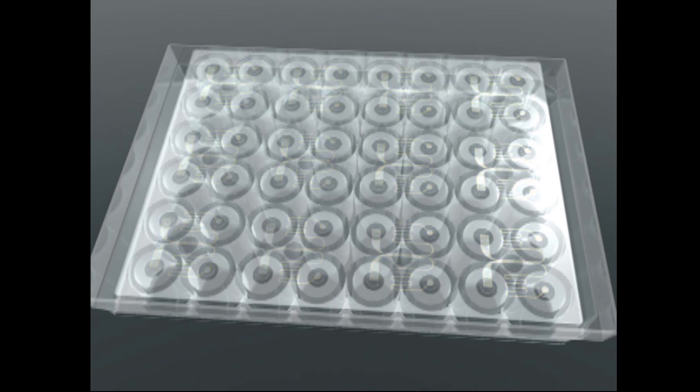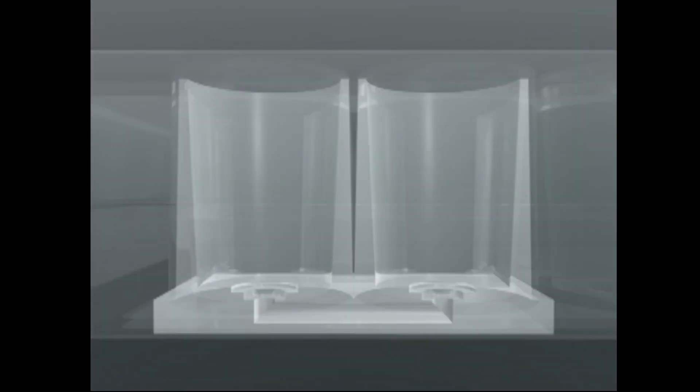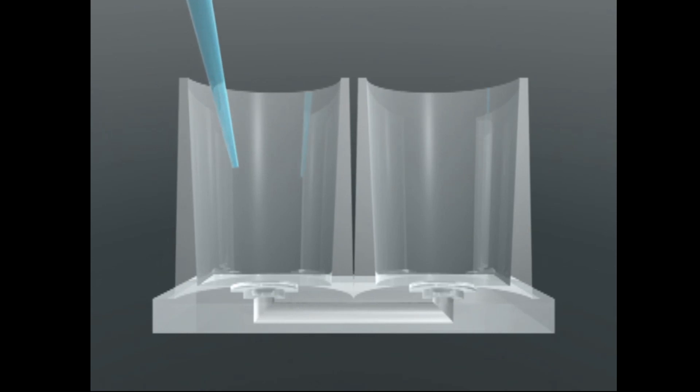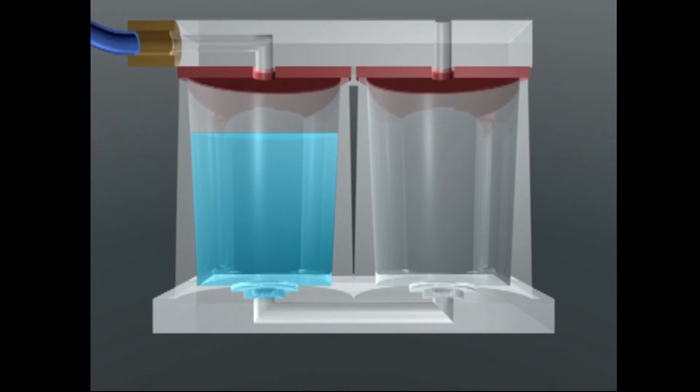Fluidic reagents such as cells, proteins and drug compounds are loaded into the wells using standard pipetters or other liquid handling instruments. Once the wells are loaded the BioFlux pressure interface is attached to the well plate. This creates a pressure tight seal around each of the wells on the plate.